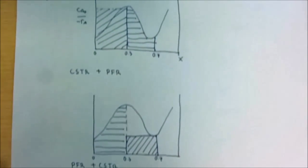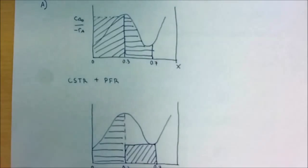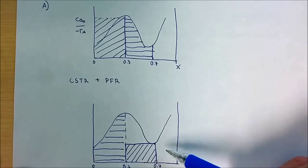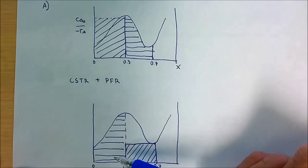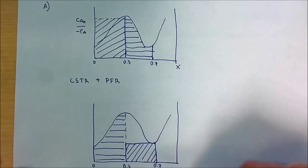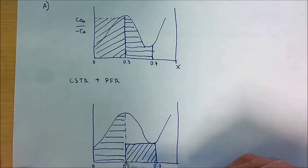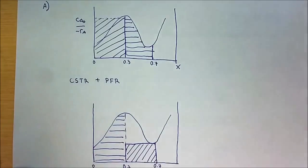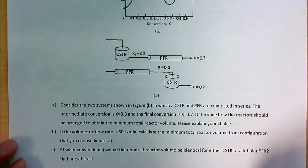Comparing the first and second scenarios, we can easily see that the second scenario — PFR followed by CSTR — provides a smaller total volume compared to the first configuration. Let's continue to part B.